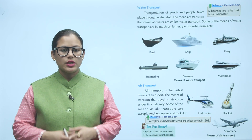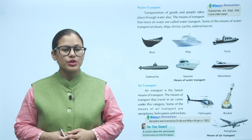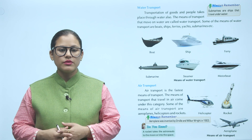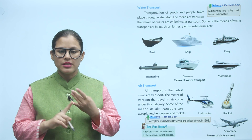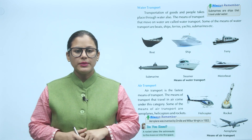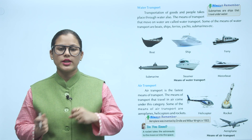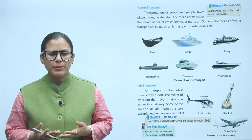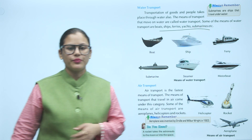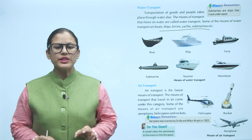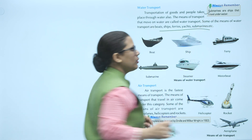Transportation of goods and people takes place on water also. The means of transport that move on water are called water transport. Some of the means of water transport are boats, ships, ferries, yachts, submarines, etc. Always remember: submarines are ships that travel underwater.